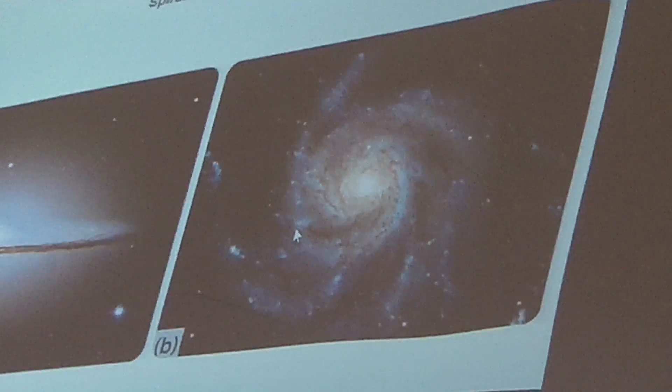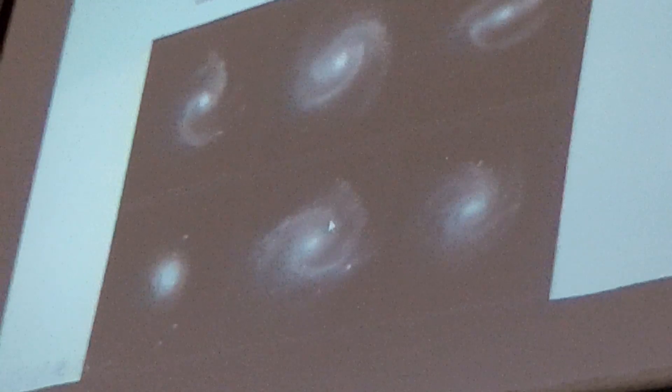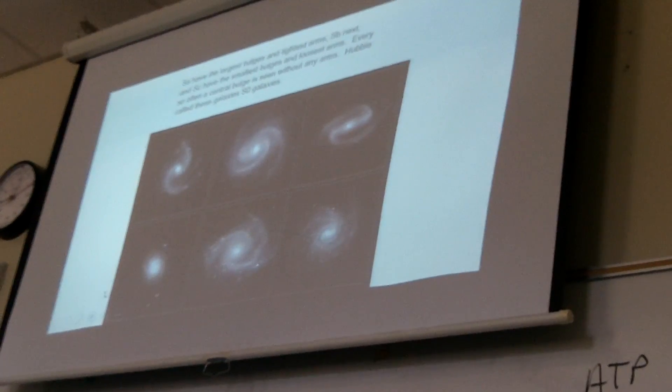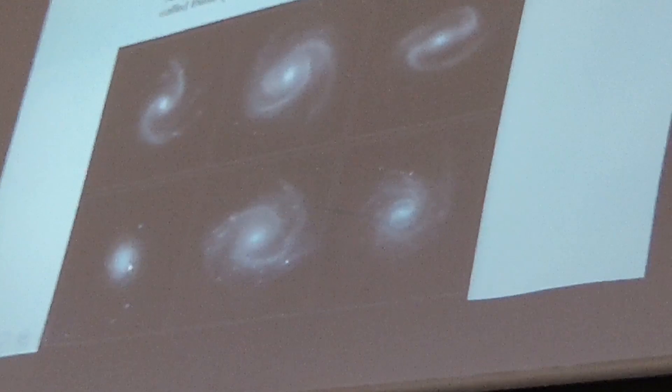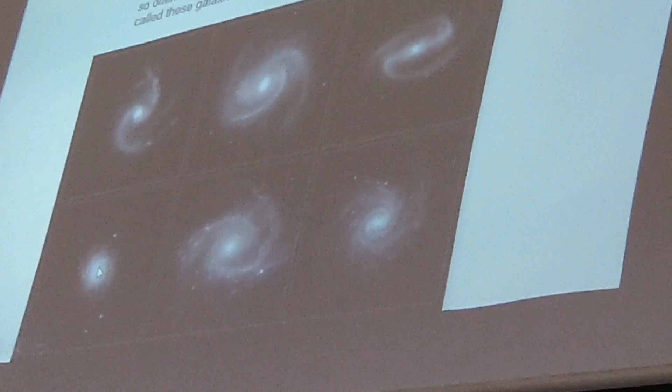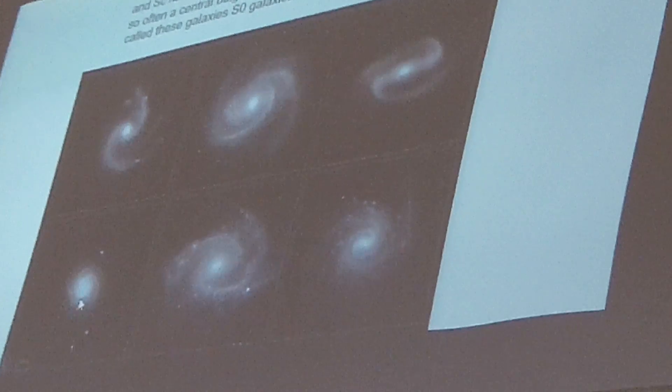Actually, we think the Milky Way is a barred spiral galaxy, which I'll show you in a minute. Now, spiral galaxies are classified as spiral A, spiral B, or spiral C based on how big the central bulge is and how tight the arms are wrapped around the center.